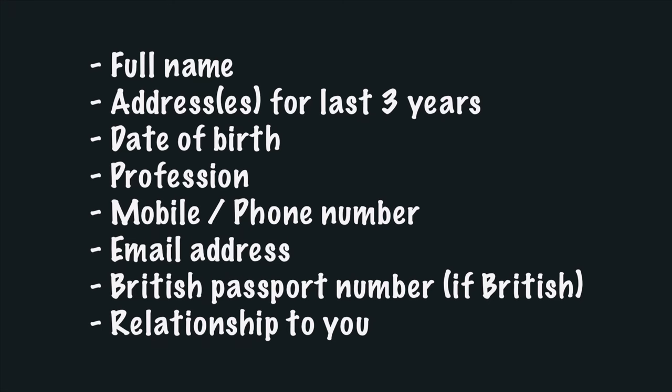If you remember from my second video where I showed the British citizenship form online, there is a section there for the referees. So once you have selected your referees, these are the information they must provide to you to complete that form. These include their full name, addresses for the last three years, date of birth, profession, mobile or phone number, email address, and if they have a British passport, their British passport number. The last piece of information is their relationship to you.